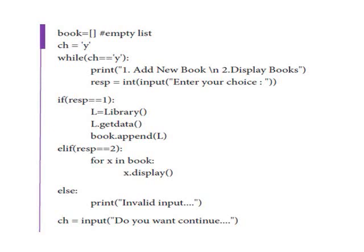In choice 1, we add a new book: l = Library() creates an object, then we call l.getdata() to get book information. We then use book.append(l) to add the library object to the book list using the append function.